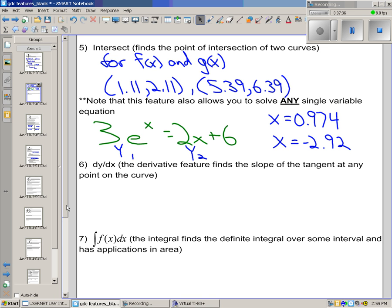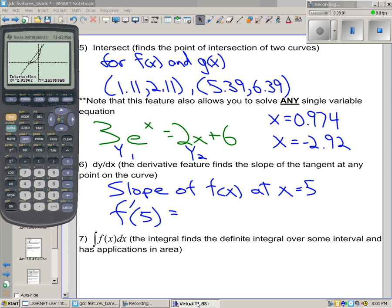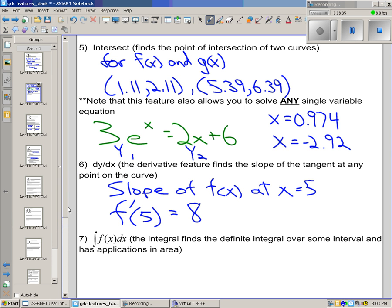dy by dx, or the derivative, finds the slope of the tangent at any point on the curve. So say we wanted to find the slope of f at x at x equals, I don't know, at x equals 5. Really that means we're looking for f prime at 5. And rather than actually differentiate f and then plug it back in, we can just go, first of all I have to put my f at x back on the graphs. I'll turn off the other ones. So there's my parabola. I can see at 5 that it should be a positive slope. It should be fairly steep. I'll go second calc 6 for dy by dx. And just tell it to look at what happens at 5. And it tells me that the slope of the curve there is 8.